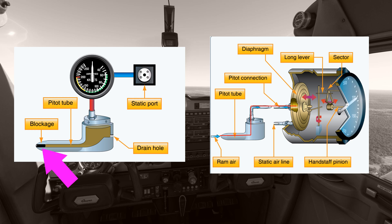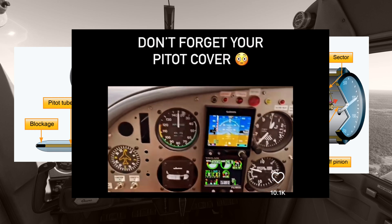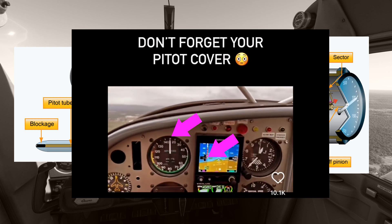Now imagine blocking the pitot source by leaving the protective cover on. The capsule can't expand from dynamic pressure because the ram air is prevented from entering. It's not airtight, so static is still available. So now the calculation being done is static pressure minus static pressure, which is zero. That's why we're seeing a big fat zero and no registered airspeed here.